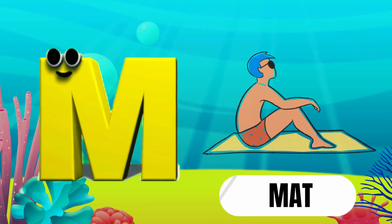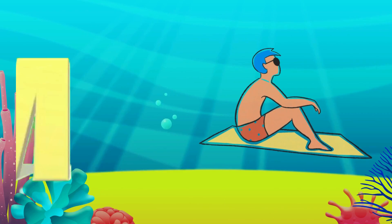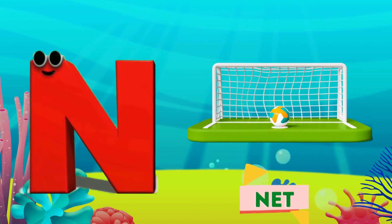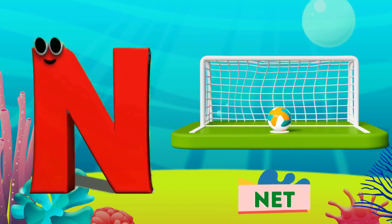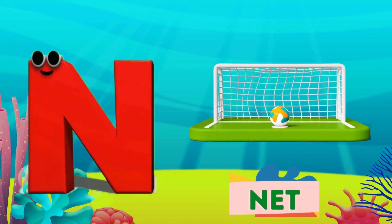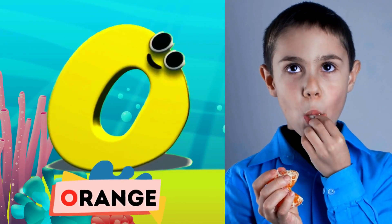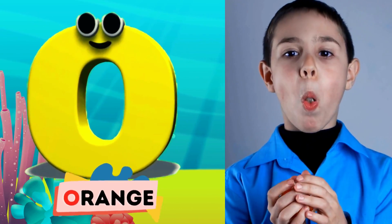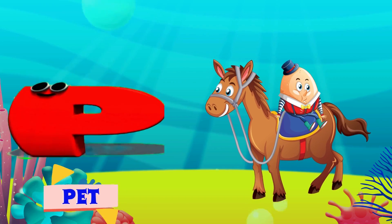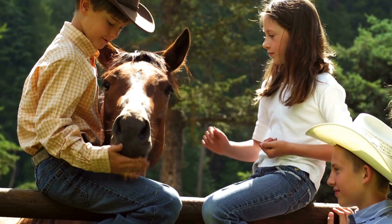M is for mat, m-m-mat. N is for net, n-n-net. O is for orange, o-o-orange. P is for pet, p-p-pet.